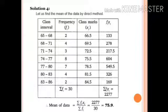Frequency is given as 2, 4, 3, 8, 7, 4, 2. Sum of frequency equals 30. Now we multiply fi into xi. 2 into 66.5 equals 133. 4 into 69.5 equals 278. 3 into 72.5 equals 217.5. 8 into 75.5 equals 604. 7 into 78.5 equals 549.5. 4 into 81.5 equals 326. 2 into 84.5 equals 169. Sum of fi xi equals 2277. Mean by direct method: x bar equals 2277 divided by 30, that equals 75.9.